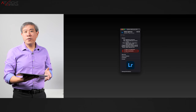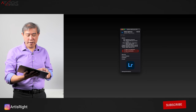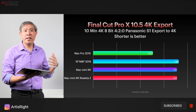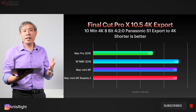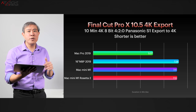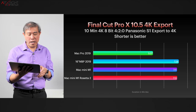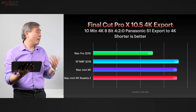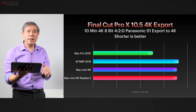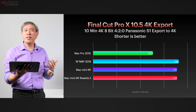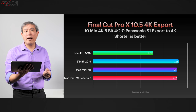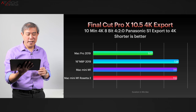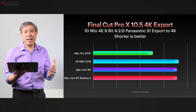I did further testing and found that with Compressor you can't really force it to run on Rosetta, so I resorted to Final Cut Pro 10.5 — doing a 4K export from within the program for Apple devices. The original source is a 4K 8-bit 4:2:2 Panasonic S1, exported to 4K. Shorter bar is better. The Mac Mini really just edges out the 16-inch MacBook Pro that costs about two to two-and-a-half times as much, and comes very close to a Mac Pro that costs around eight times as much.